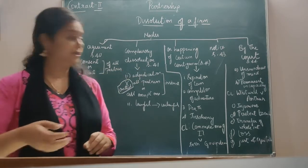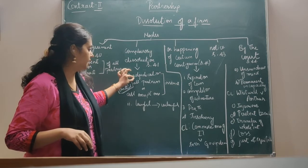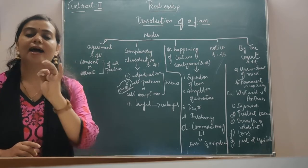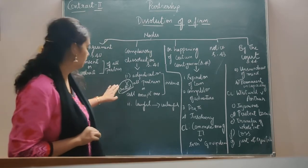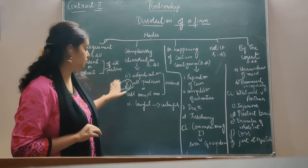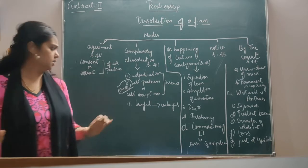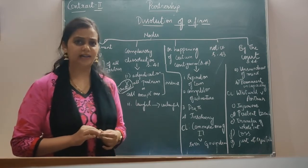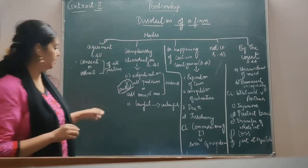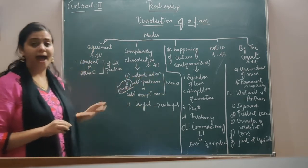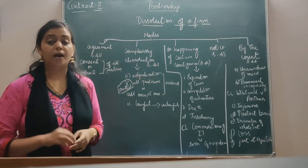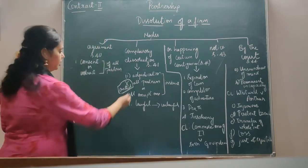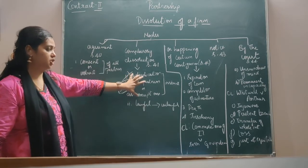The next is compulsory dissolution under Section 41. It says that when all partners or all except one partner is adjudicated as insolvent, the partnership stands dissolved. However, this particular subsection has been omitted by the Insolvency and Bankruptcy Code 2016 and is no more in existence.